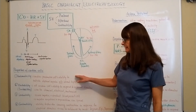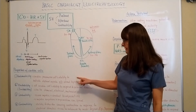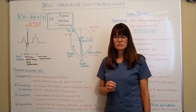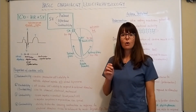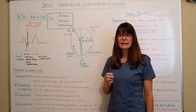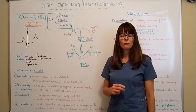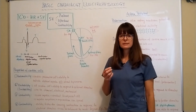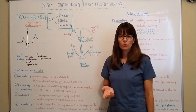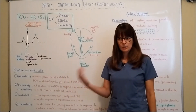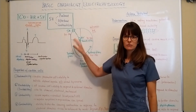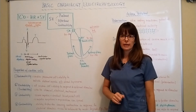The first property is automaticity — cardiac pacemaker cells have the ability to initiate an electrical impulse without a stimulus from a nerve. All cardiac cells are specialized pacemaker cells. We typically think of the heart's pacemaker as just the SA node, the sinoatrial node, but every cardiac cell has the ability to take over as a pacemaker, initiating that impulse without any nerve being present.